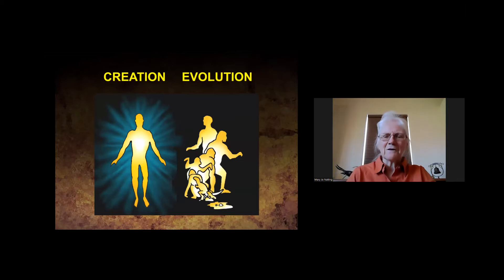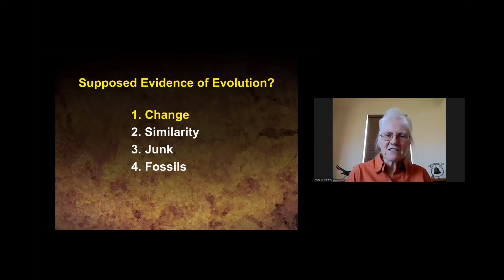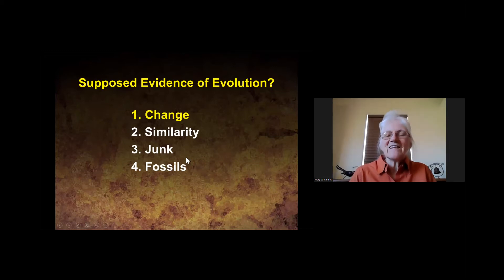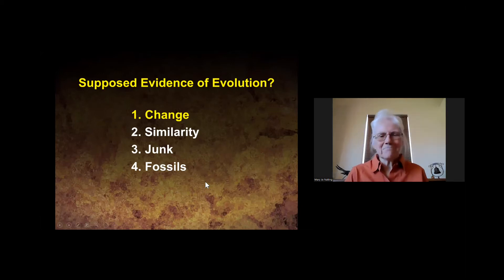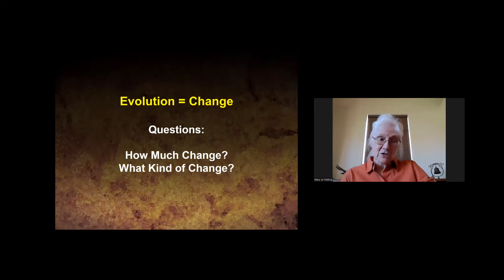Today we're going to look at three categories of supposed evidence for evolution, and then Dave will look at fossils. The three categories we'll examine are change, similarity, and junk. We're grouping them this way simply to help find a pattern for sharing this evidence.